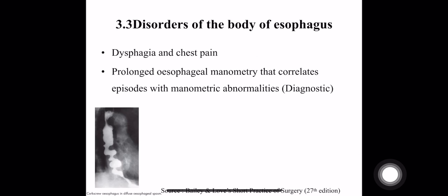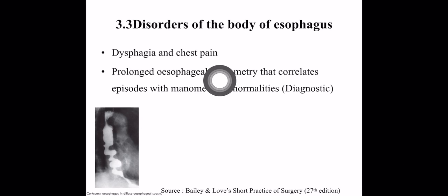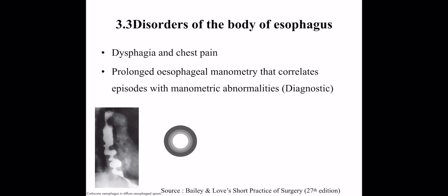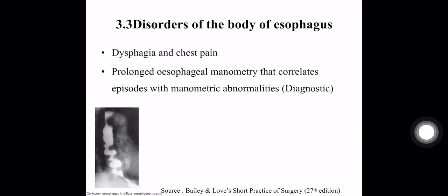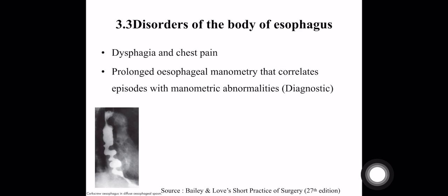The next one is disorders of the body of esophagus. The patient can have dysphagia and chest pain. This is a corkscrew esophagus in diffuse esophageal spasm, and prolonged esophageal manometry correlates with the episodes of manometry abnormality — meaning the esophageal spasm correlates with the manometry abnormalities for diagnosis.